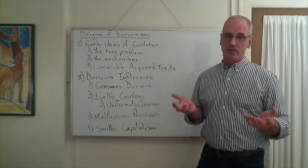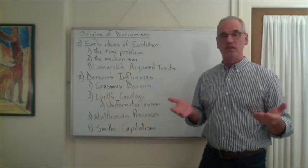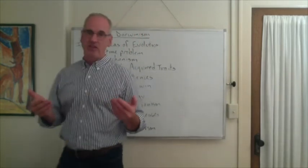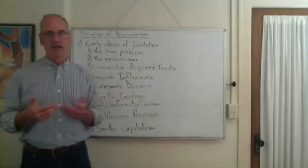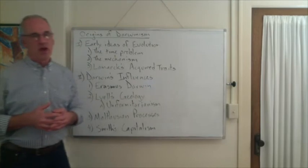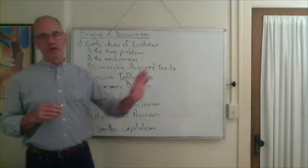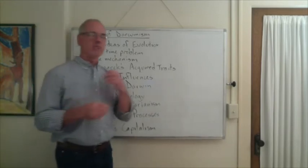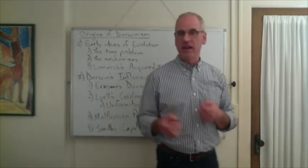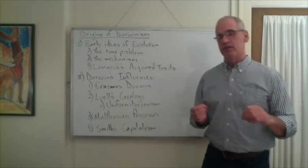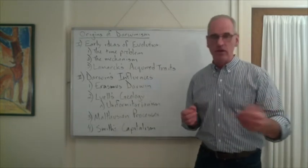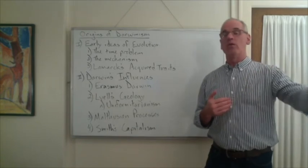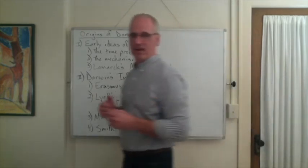Well, the uniformitarians realized that means you need a lot of time. Because something like erosion is not happening fast. You can't erode the Grand Canyon in 6,000 years. So the uniformitarians began to push the age of the Earth back. They began to say the Earth is much older than we think. By the early 1800s, geologists are starting to say the Earth might be millions of years old. This allows biologists to say, we've got more time.